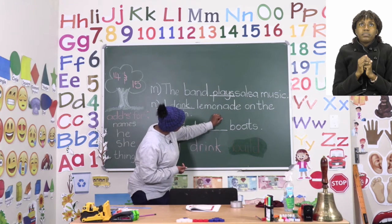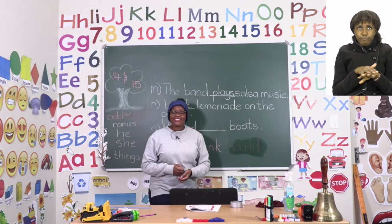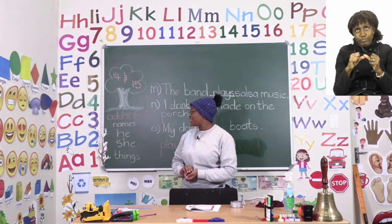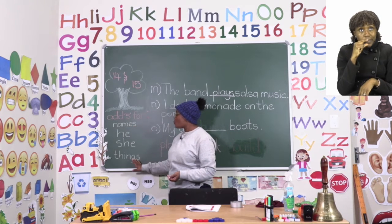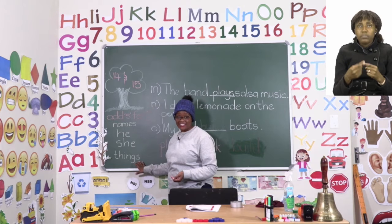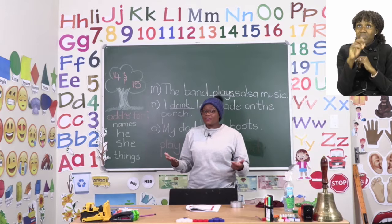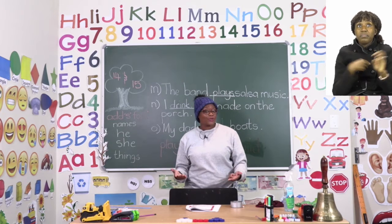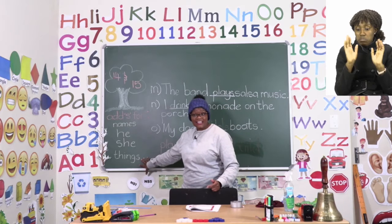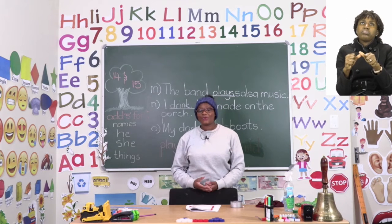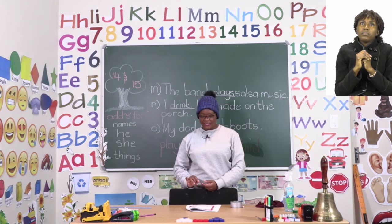Good job, everyone. So take your time, boys and girls — I know this might be a little bit confusing. If you have names, 'he,' 'she,' or things that have been said, then all we do is add an S. But if there's no name, no 'he' or 'she,' and the thing is not clear, then we leave the word as it is, so that we can show simple present tense.